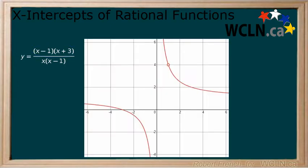Here, we have the graph of a rational function that has one x-intercept and it is at x equals negative 3. Now, let's take a look at the equation of this function. Looking at the numerator, we see there are two factors.